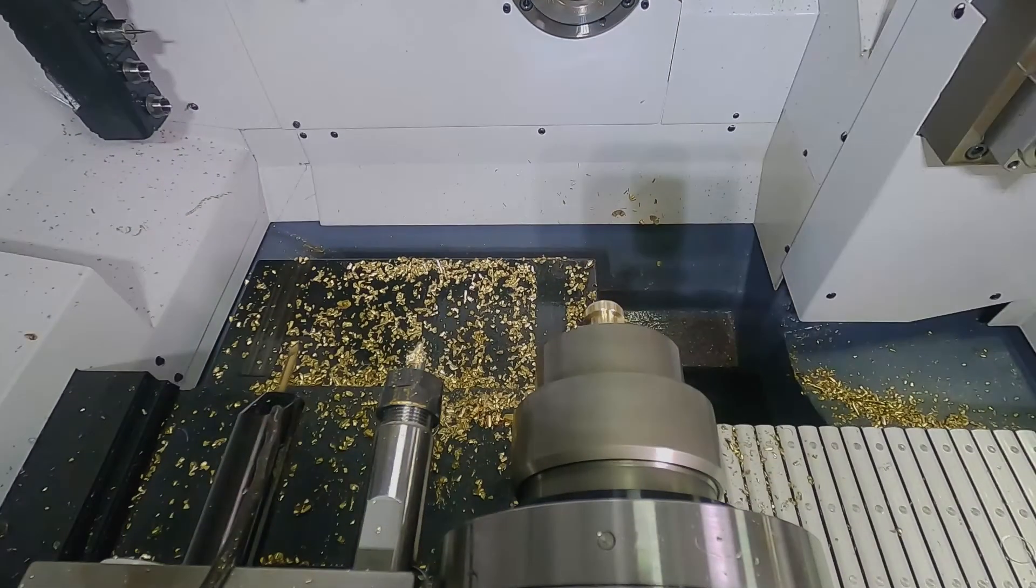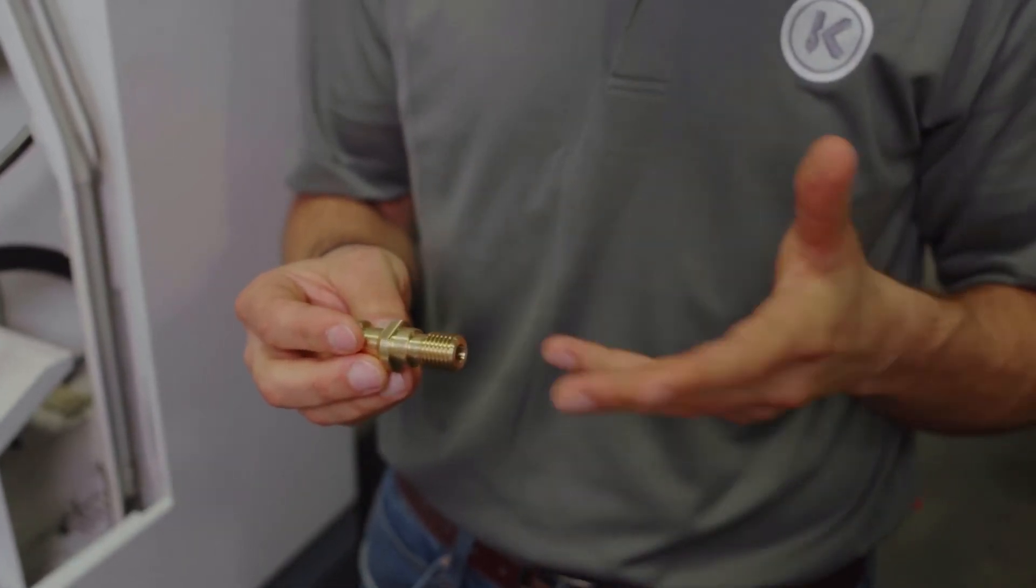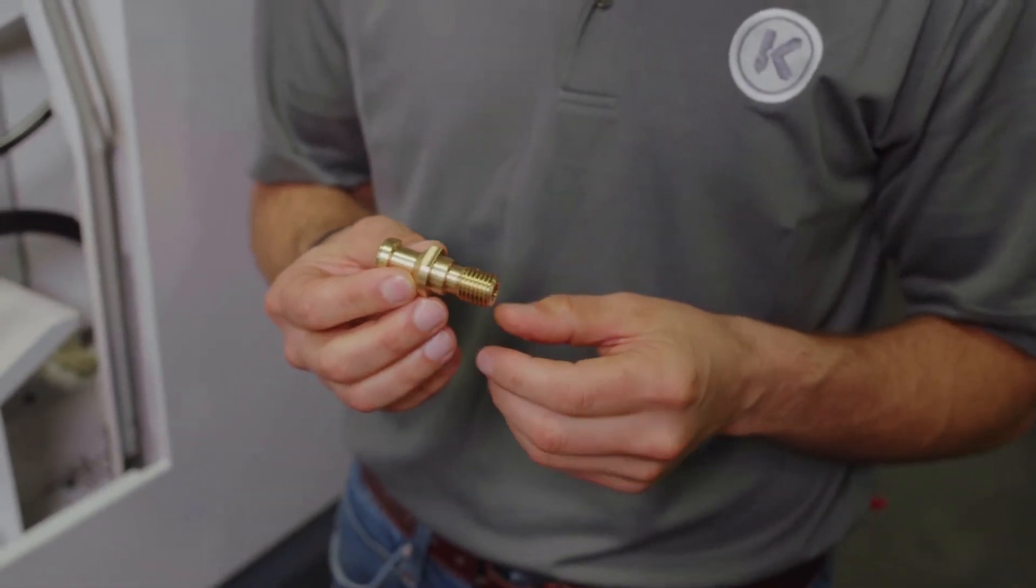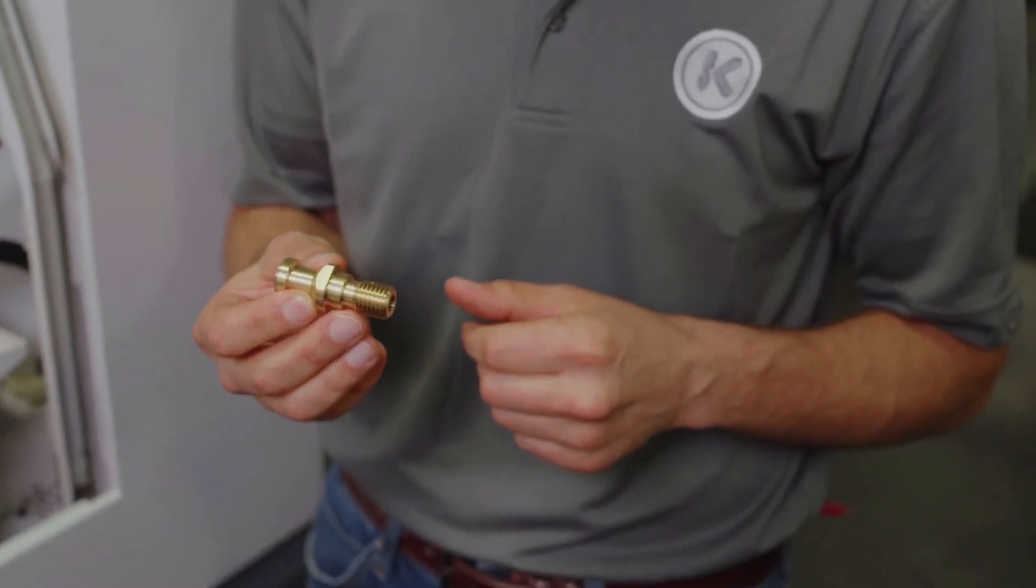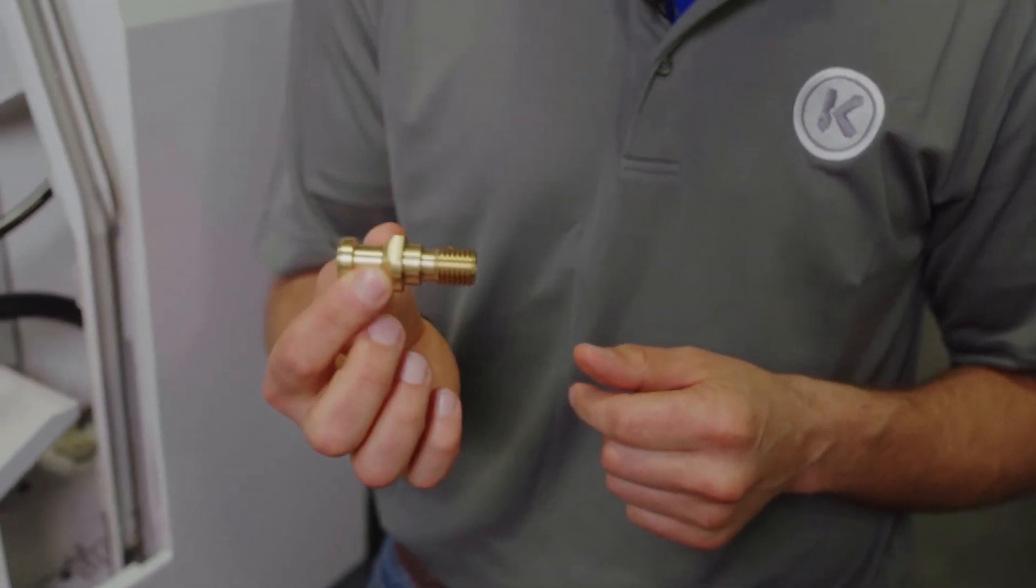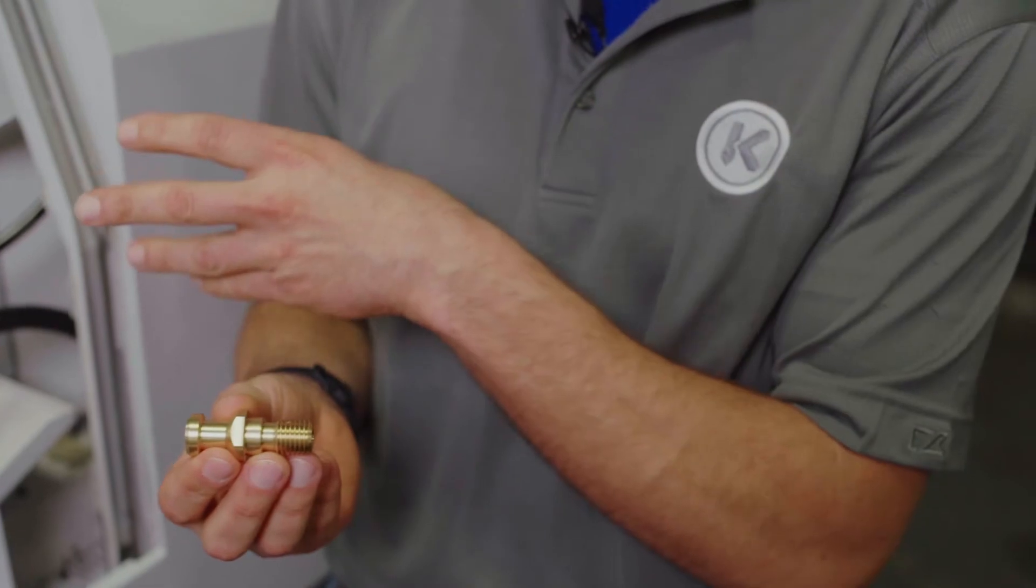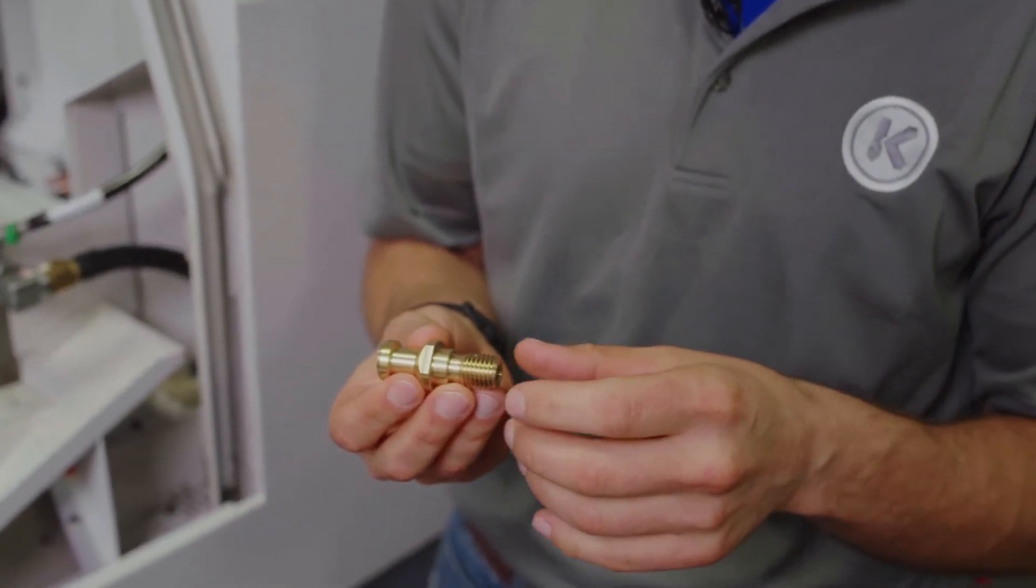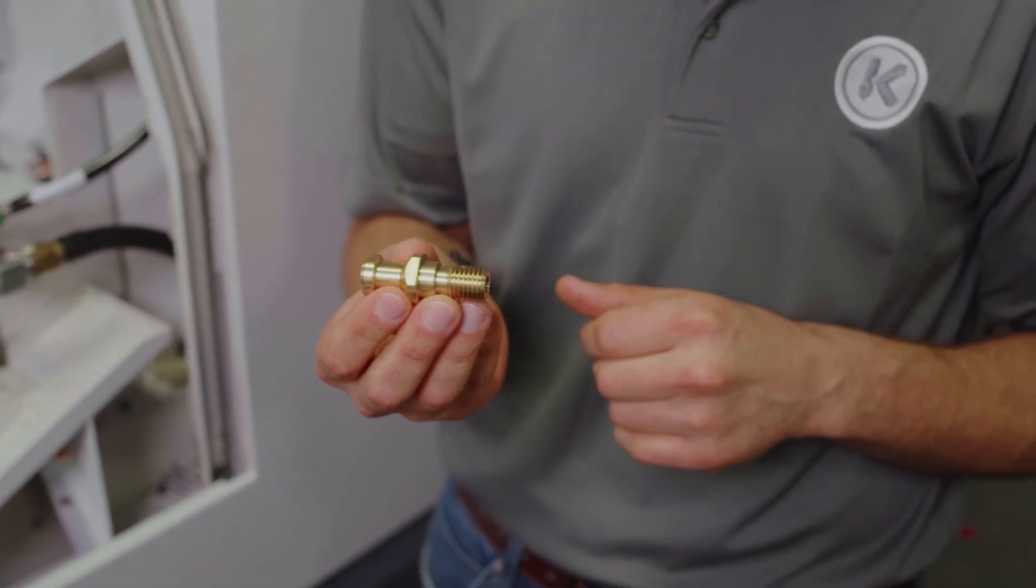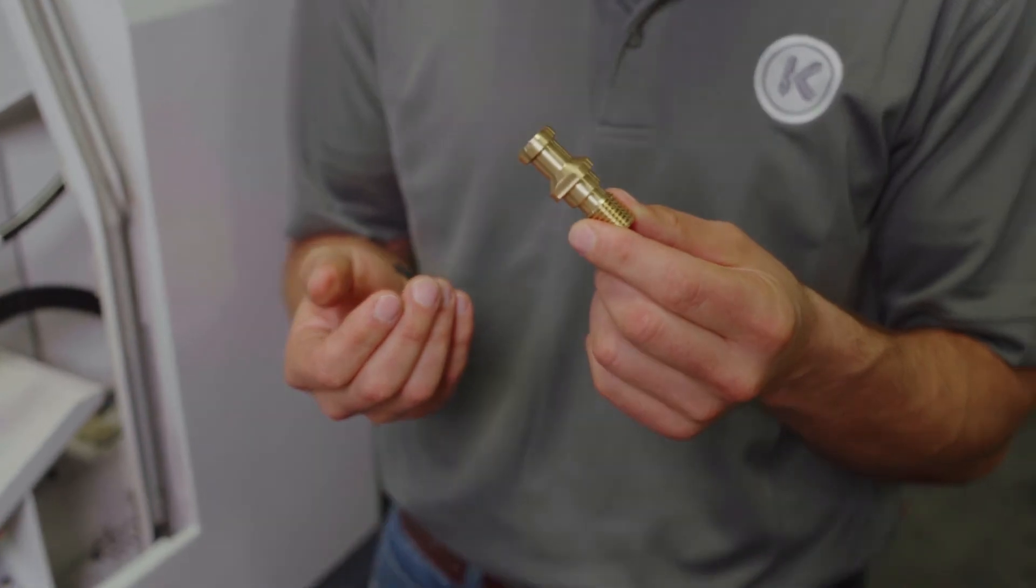So this part on average takes about five and a half minutes to machine, using a different raw material than what I have in my hand, to complete one part on our turret style lathes. On our Swiss lathes, because we have the rigid support and the dual spindles, we were able to complete this part in less than two minutes, offering a huge advantage, huge efficiency, and overall a better quality part.